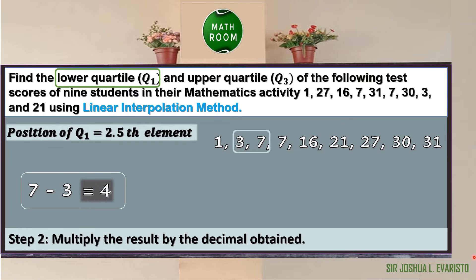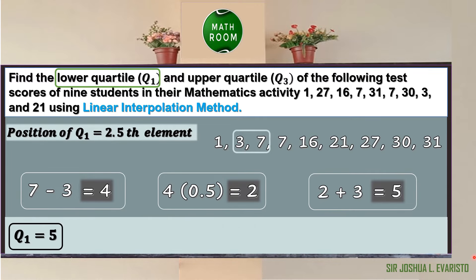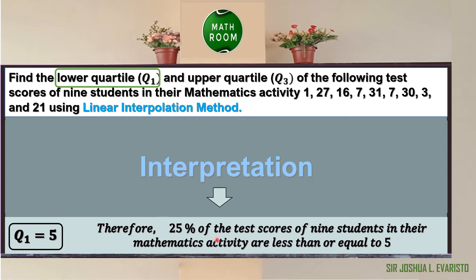Step 2 of interpolation: multiply the result by the decimal obtained — 4 × 0.5 = 2. Step 3: add the result to the smaller number — 2 + 3 = 5. Hence, using the linear interpolation method, Q sub 1 = 5. Since Q sub 1 means 25% of the data, 25% of the test scores of 9 students are less than or equal to 5.